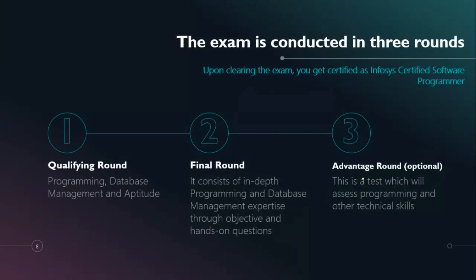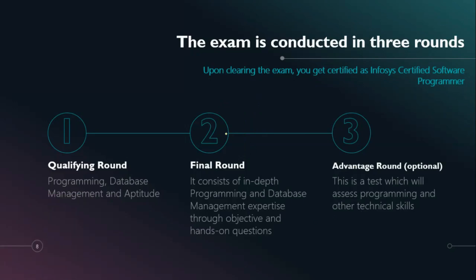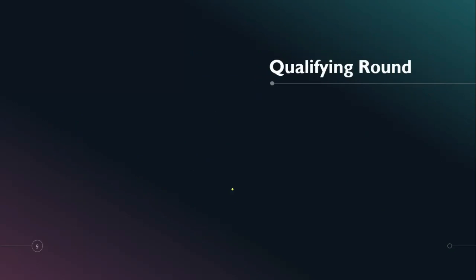The third round is the optional Advantage Round. After passing Round 2, you become an Infosys Certified Software Programmer and can present that certificate to any company. But if you want to pursue a job at Infosys, you need to score above 65% in the Final Round and then write this Advantage Round, which is a pure programming/coding test.